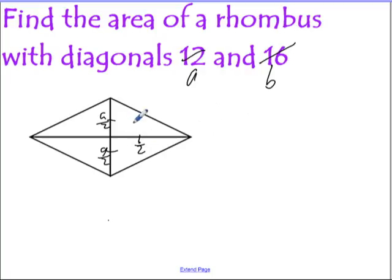So if we find the area of just one of these triangles, that's going to be 1/2 base times height. Well, the base is, let's say, B over 2. And the height is, let's say, A over 2.